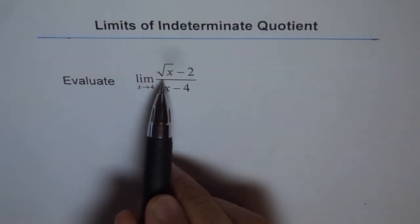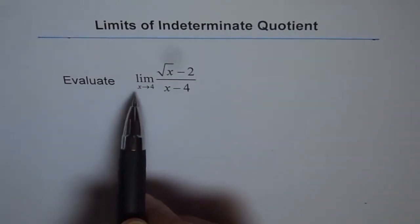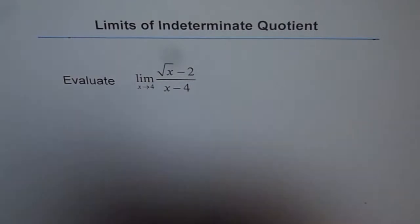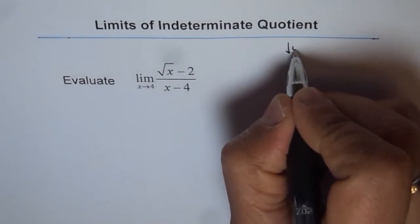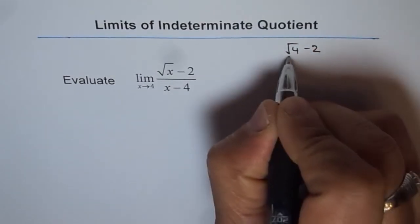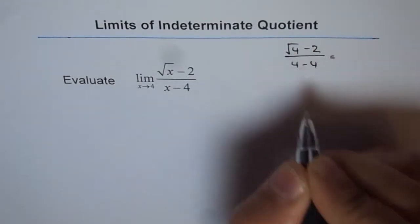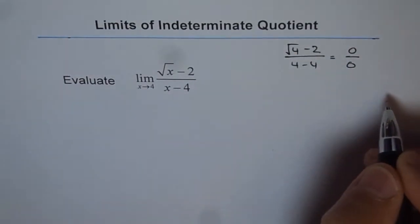Evaluate limit of square root of x minus 2 divided by x minus 4 where x approaches 4. Now, let's substitute 4 and see what we get. Square root of 4 minus 2 in the numerator and denominator is 4 minus 4. Square root of 4 is 2, 2 minus 2 is 0, so we do get 0 over 0.